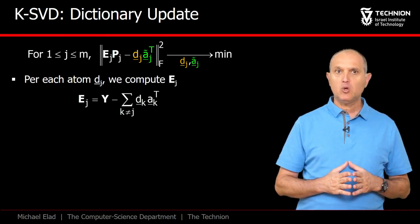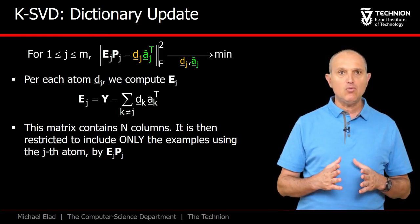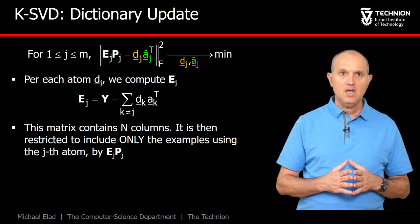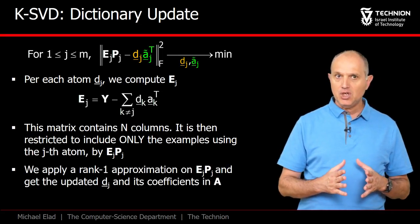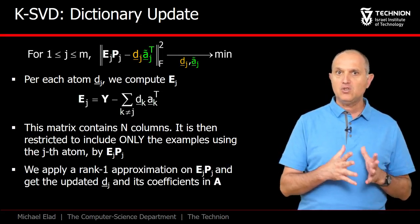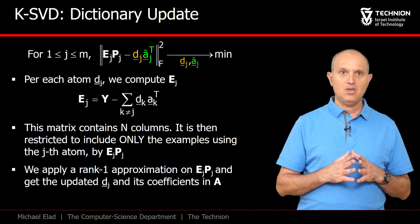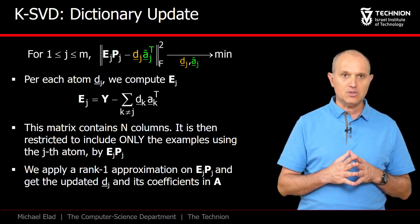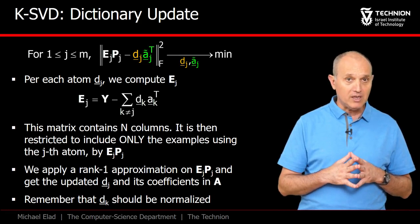So to conclude, we start by computing E1, then we remove the irrelevant columns from it, and then we apply the rank-1 approximation in order to find D1 and its coefficients in A. This should be repeated for all the atoms. Note that the atom D1 should be normalized.